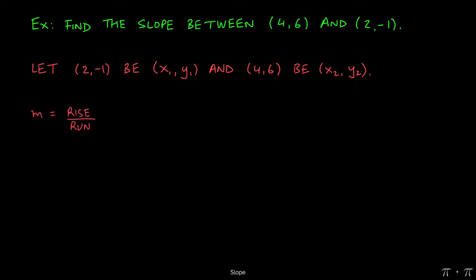Remember that slope is always given as rise over run, which can also be represented as a change in y over a change in x. And as we've seen before, the formula for slope is y2 minus y1 over x2 minus x1.